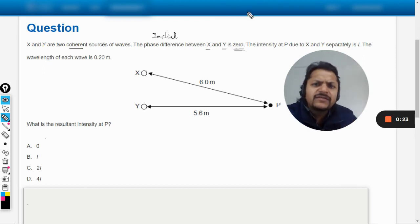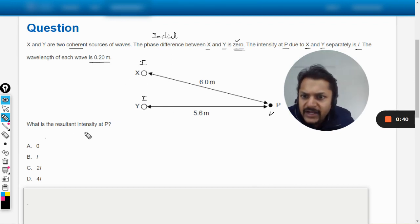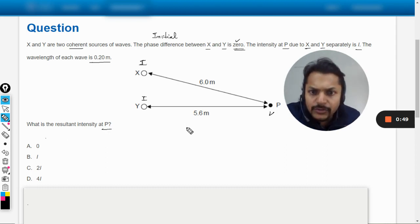Anyways, the intensity of P due to X and Y separately is I. So the intensity here is I, here is I. Both of these intensities are now going to superpose each other at point P. The wavelength of each wave is 0.2 meters, and what is the resultant intensity at point P? So we want to find the resultant intensity at point P.